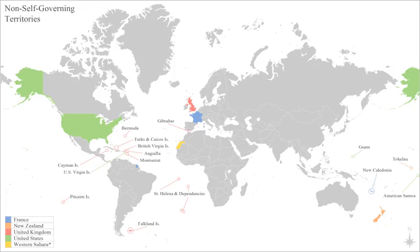The United States was formed from a union of thirteen distinct British colonies. The Colony of Virginia was the first of the thirteen colonies. All thirteen declared independence in July 1776 and expelled the British governors.